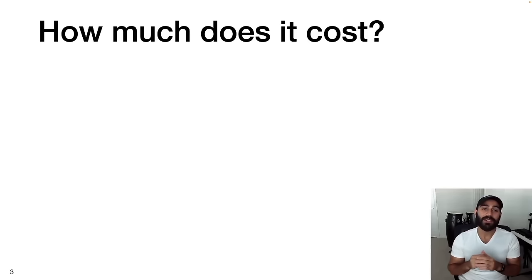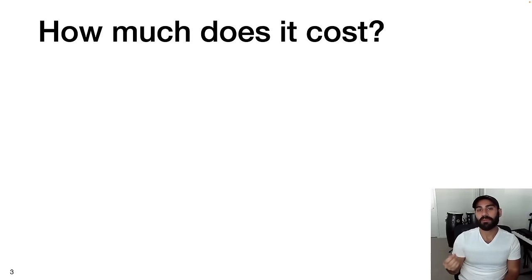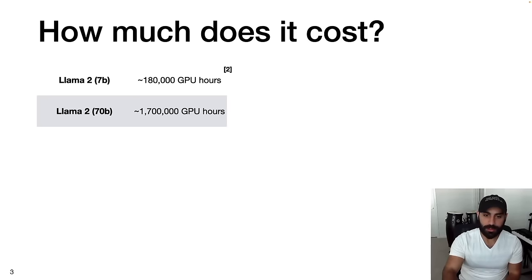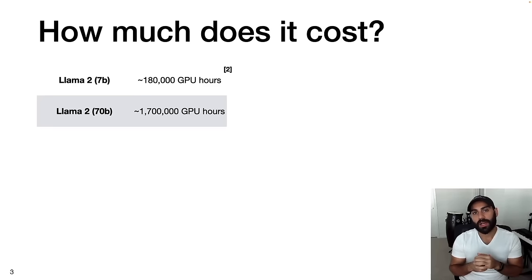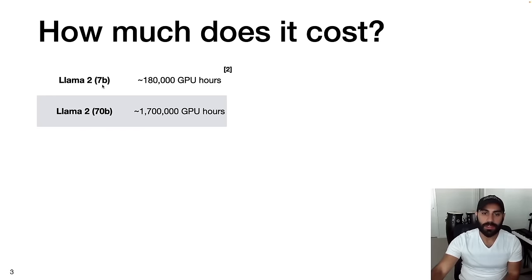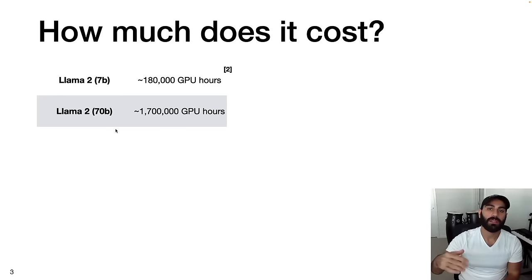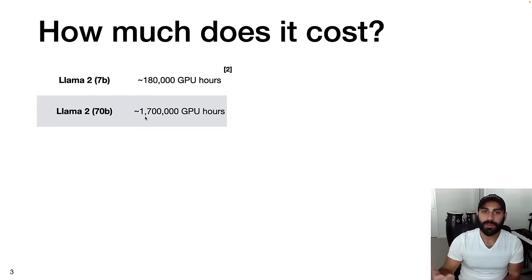Before diving into the technical aspects of building a large language model, let's do some back-of-the-napkin math to get a sense of the financial costs. Taking as a baseline Llama 2, the relatively recent large language model put out by Meta, these were the computational costs associated with the 7 billion and 70 billion parameter versions. For Llama 2 7B, it took about 180,000 GPU hours to train, while for 70B, a model 10 times as large, it required 10 times as much compute — about 1.7 million GPU hours.